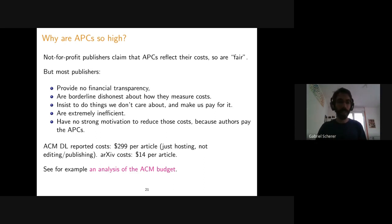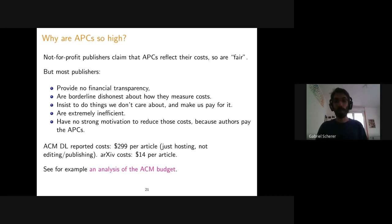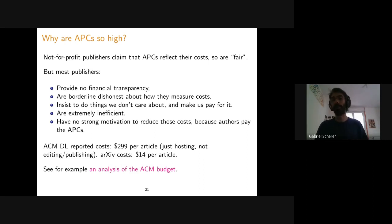There is no strong motivation for publishers to reduce costs because enough authors pay APCs anyway. For example, LIPICS spends much of its 60 euros per paper on a careful German editor ensuring all LaTeX sources of all papers in a proceedings volume compile together — adjusting macros and fixing conflicts. Maybe we could stop doing that and just produce individual PDFs, and in practice it would be fine today, but it's not how LIPICS runs things.